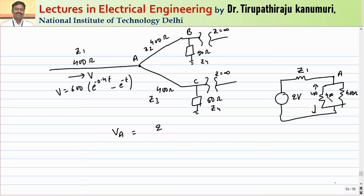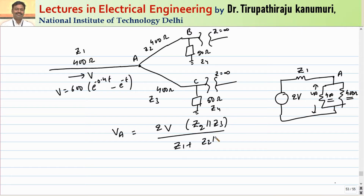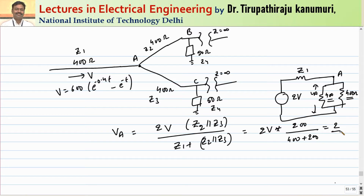The voltage at node A is the transmitted voltage, calculated as VA = 2V × (Z2 ∥ Z3) / (Z1 + Z2 ∥ Z3). Since Z2 = Z3 = 400 ohms, Z2 ∥ Z3 = 200 ohms. So VA = 2V × 200 / (400 + 200) = 2V × 200/600 = (2/3)V. This is the voltage traveling forward on each of the two parallel lines.